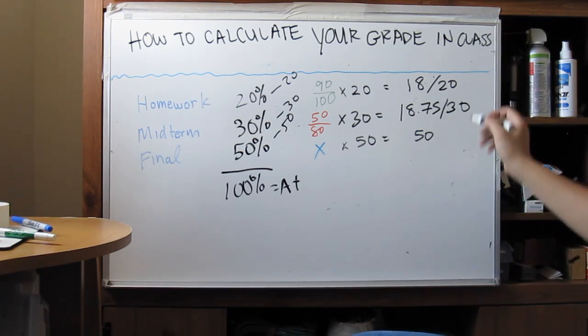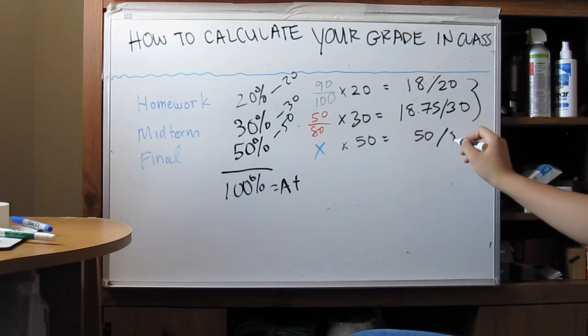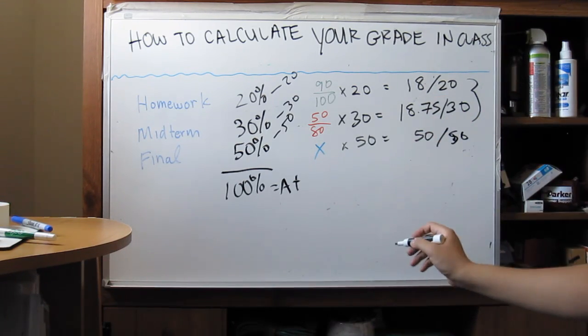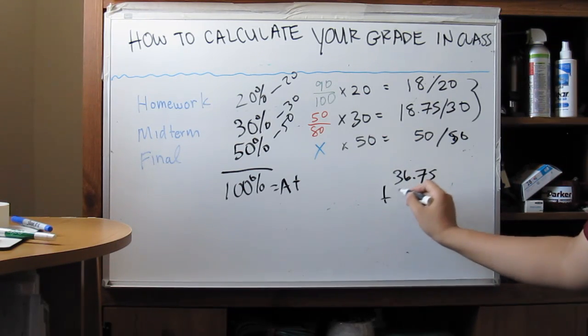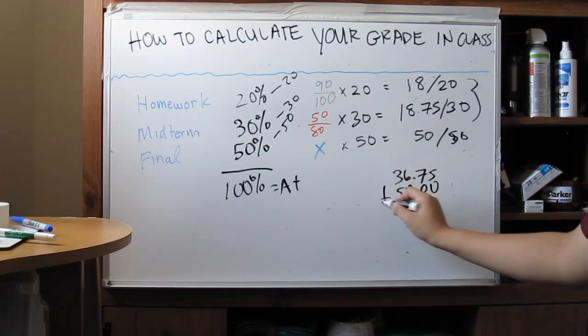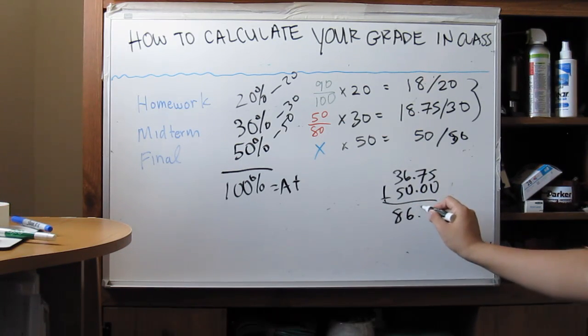So now what you want to do is just add all these values here. So 18 plus 18.75 is going to be 36.75, plus the 50 will come out to 86.75 over 100.